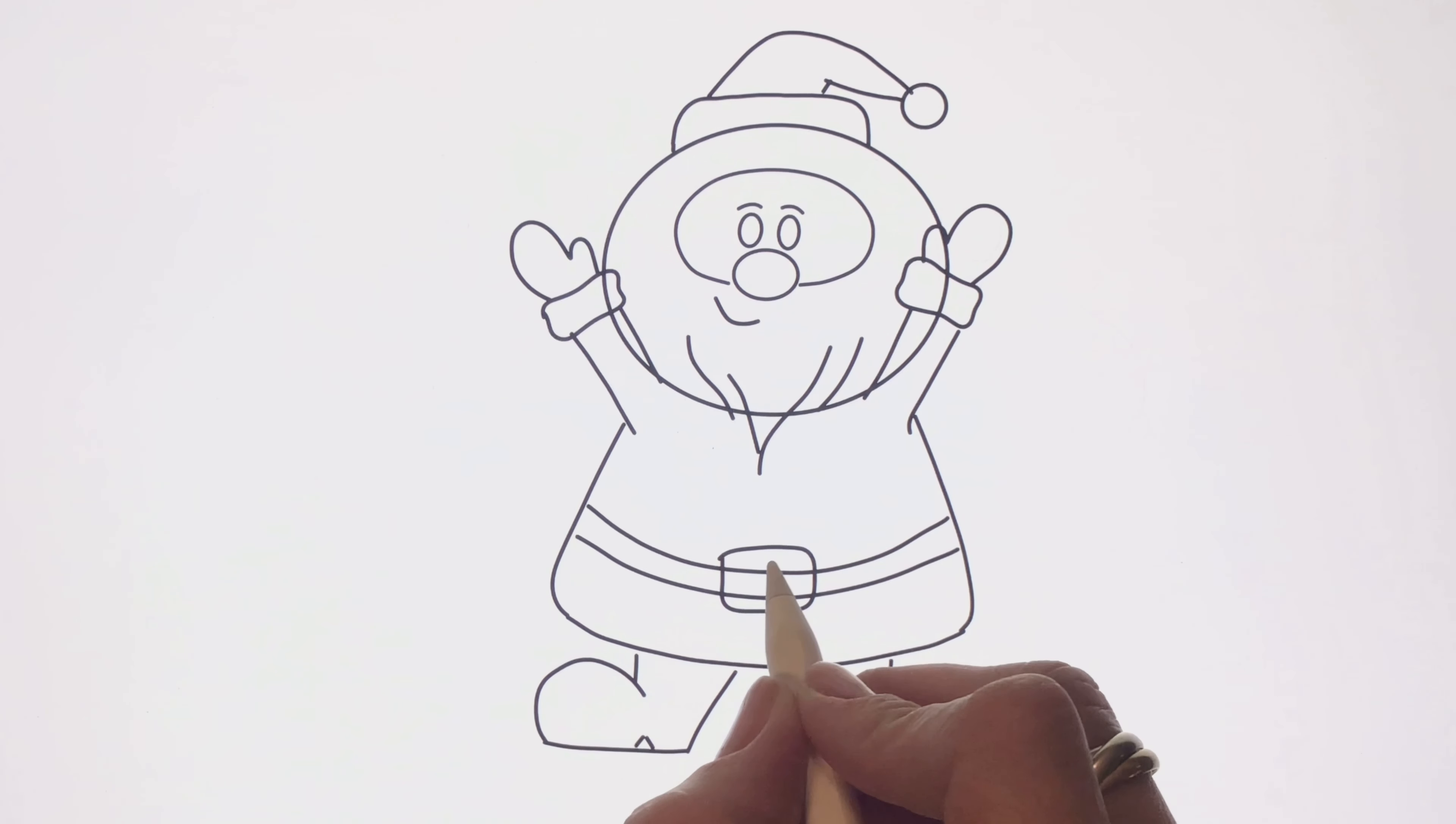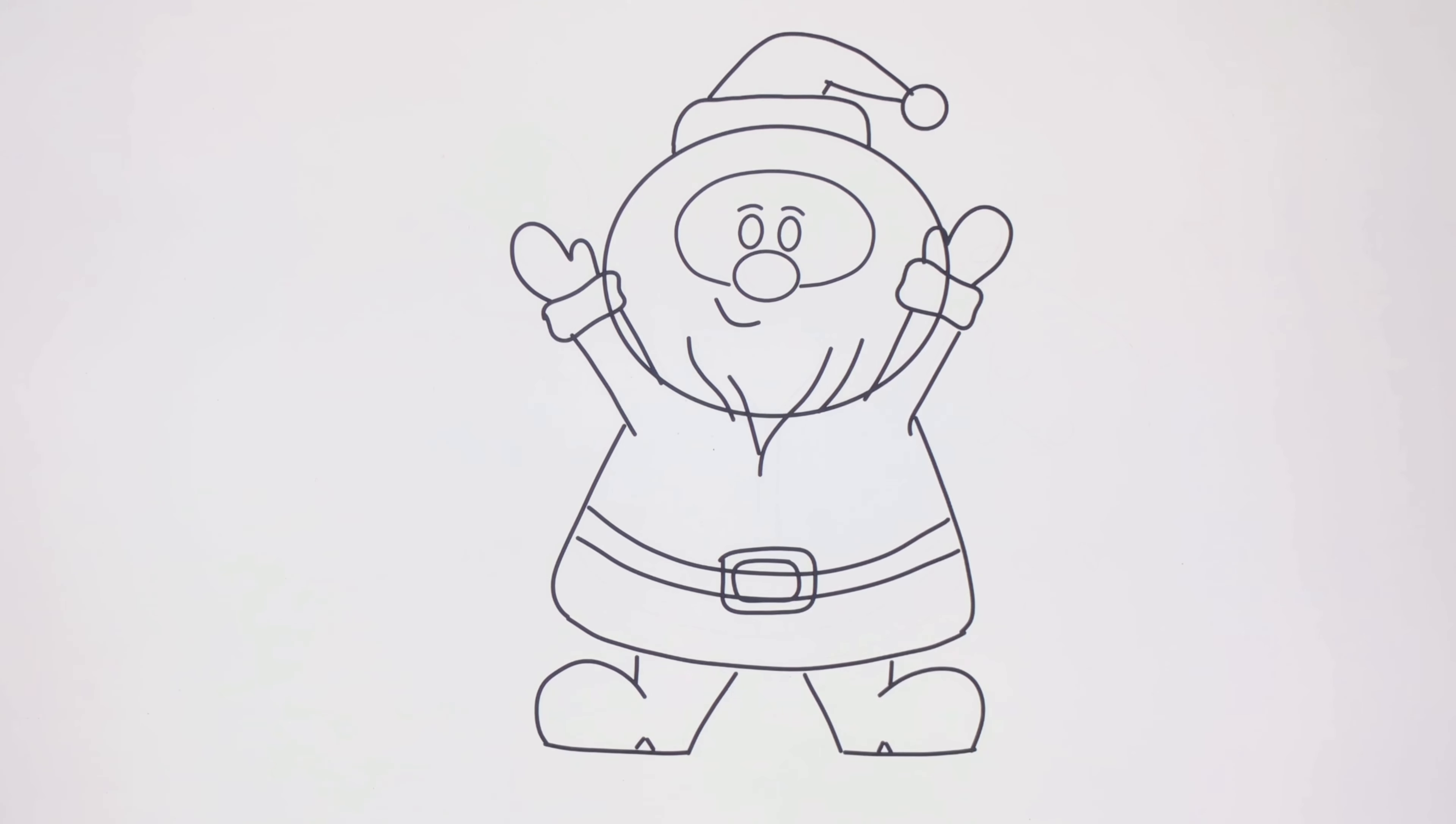Draw the belt buckle in the middle - a rectangle with a smaller rectangle inside.